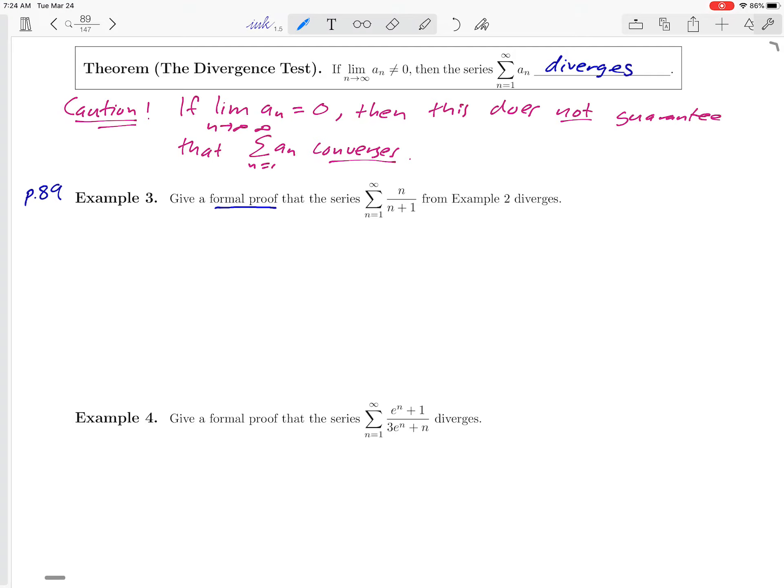What do we mean by a formal proof? Well, a formal proof is really just a careful explanation as to why this series diverges. So we're going to take the intuitive argument that we gave in example 2 and just formalize it by using this theorem, the divergence test that we talked about above.